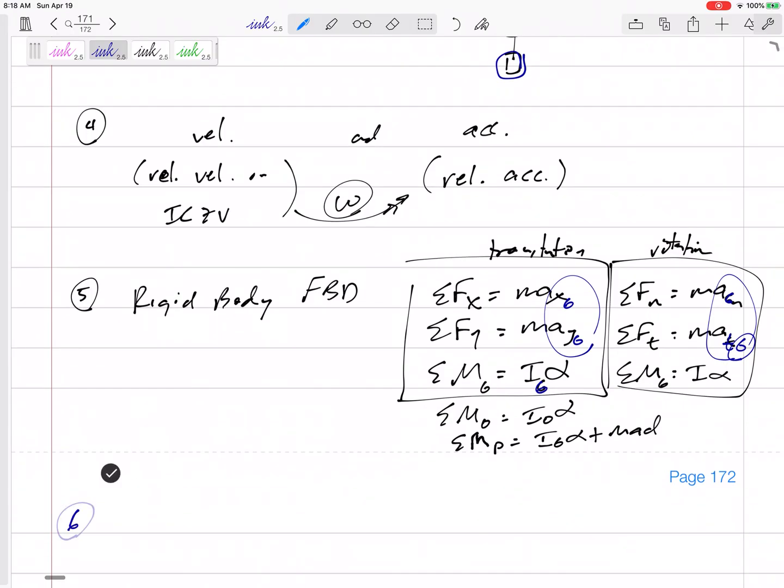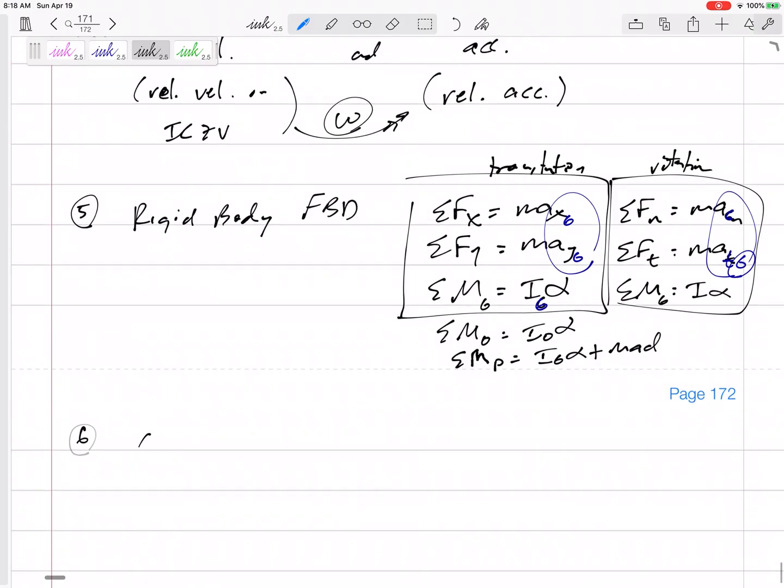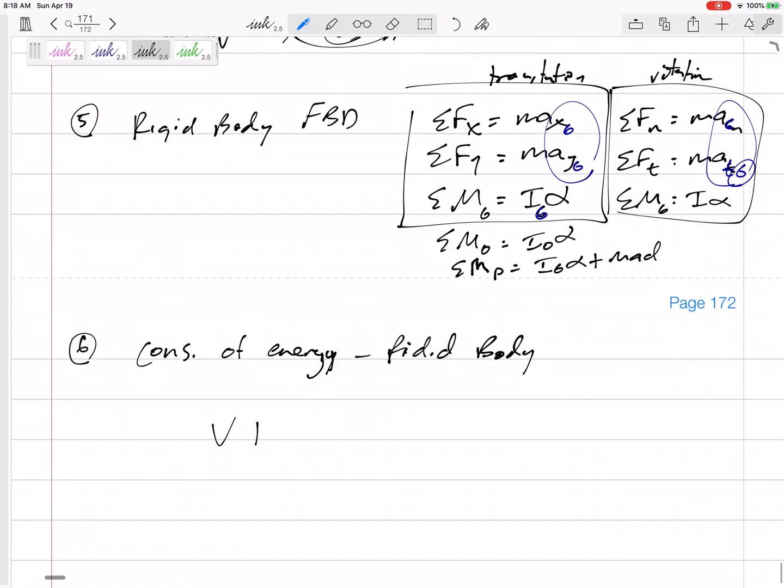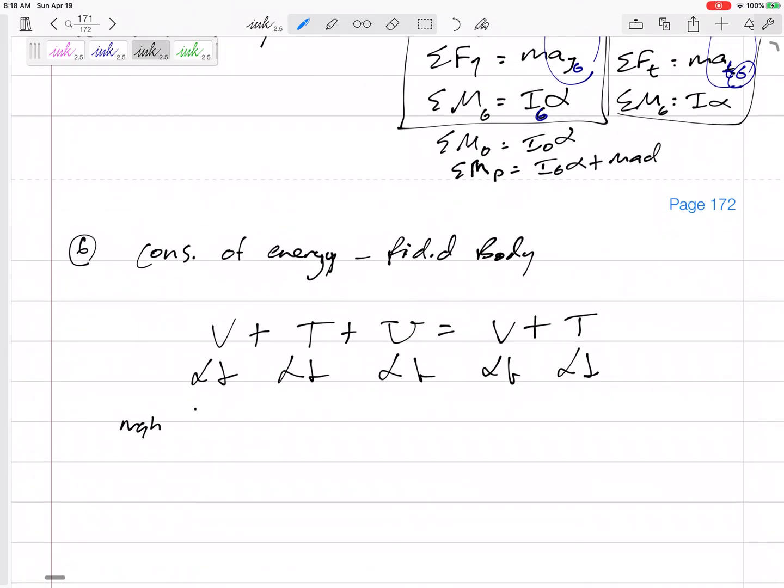All right. And problem number six, you knew what this one was going to be, conservation of energy, rigid body, rigid body, rigid body, conservation of energy, that V plus T plus non-conserved work equals V plus T. These have two things for every one, right? The MGH, or let's just say the potential energy in gravity, potential energy due to a spring, the linear kinetic energy, rotational kinetic energy, Fdm theta, gravity, spring, linear, rotational. All those problems that we've been doing, I think we've done a lot of those conservation of energy problems. Okay.